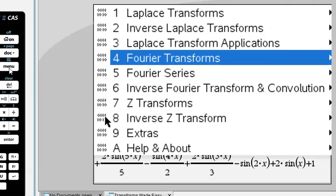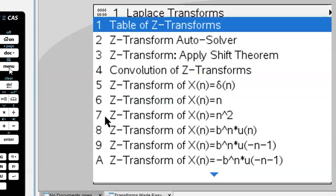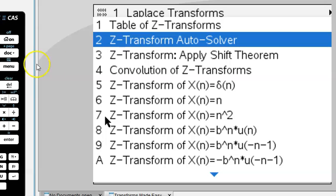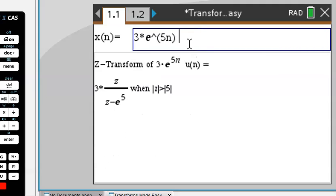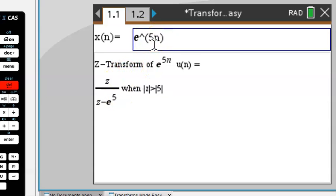Z-transforms. Again, there's a table of z-transforms. You can always use the autosolver, just enter your equation, like this one here, 3 times e to the 5n, and out comes the z-transform down there. If you change your input, you will have a different z-transform every single time.